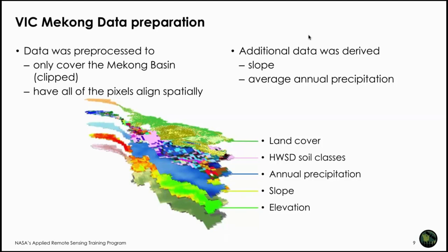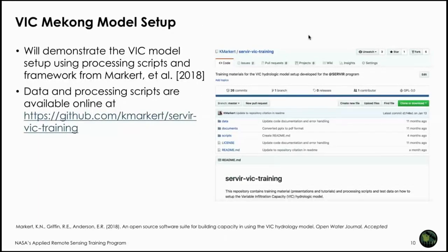The model also has lookup parameterizations. When going through the scripts, understand that on the back end we're deriving additional parameterizations from these GIS datasets. We're using a package available freely on GitHub to do this process. When I walk through these scripts, they're all from this package, and you can download it using the link shown.